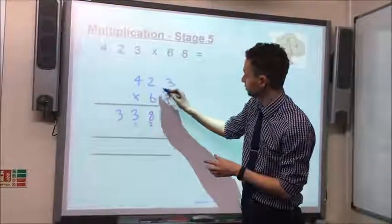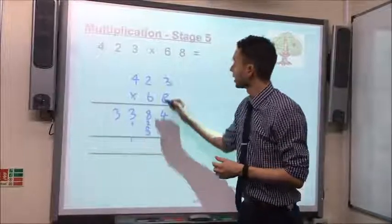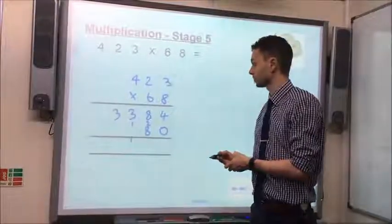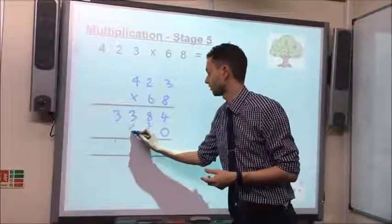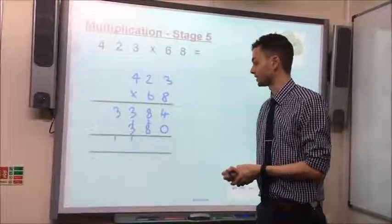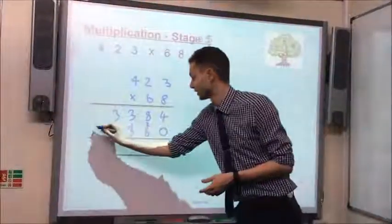Right, so now we do 6 multiplied by 3, which is 18. 6 times by 2, which is 12. Add the 1, makes 30. 6 multiplied by 4 is 24. Add the 1, makes 25.